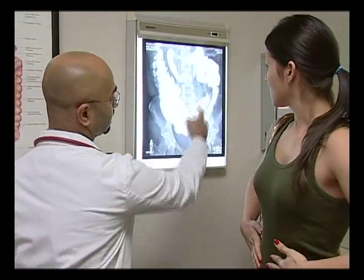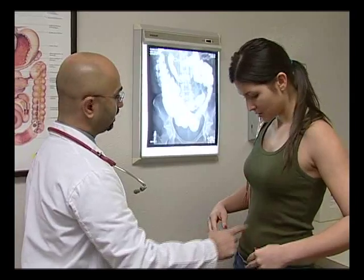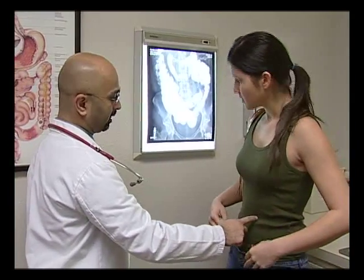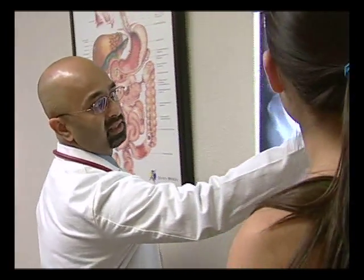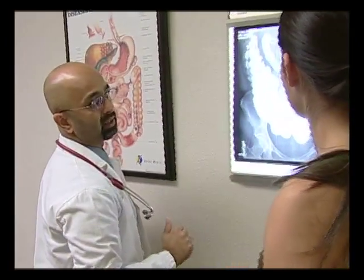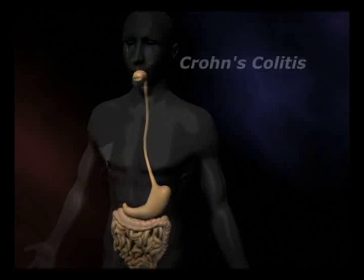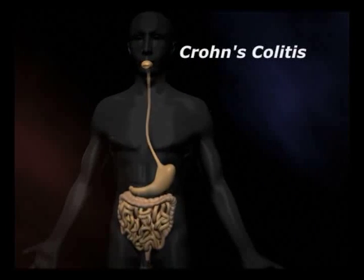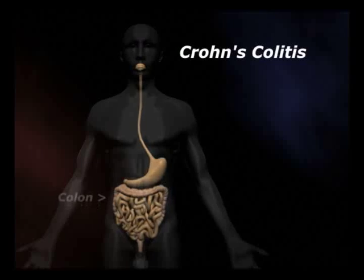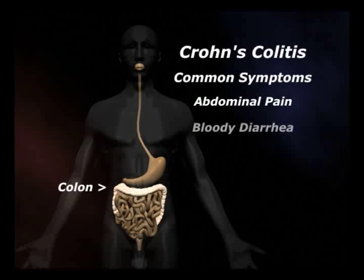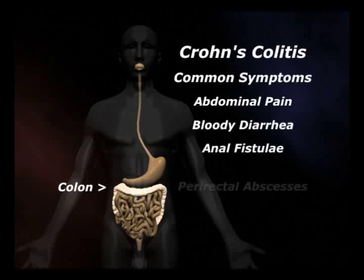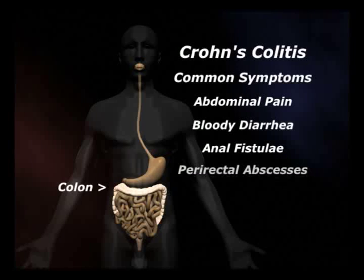Once your physician has diagnosed what area of your gastrointestinal tract has been affected and to what extent, he may refer to the condition using different names specific to the location of the inflammation. Crohn's colitis is an inflammation exclusive to the colon. Common symptoms are abdominal pain and bloody diarrhea, but a person might also experience anal fistula or pararectal abscesses.